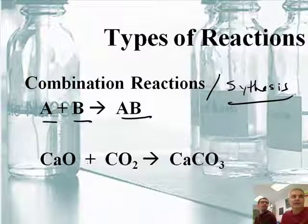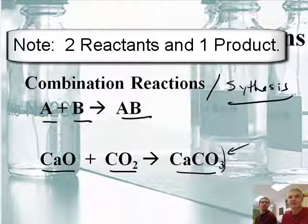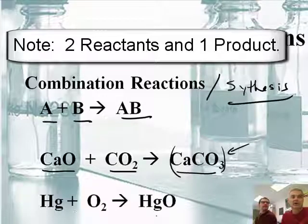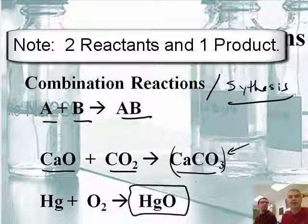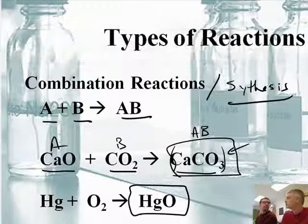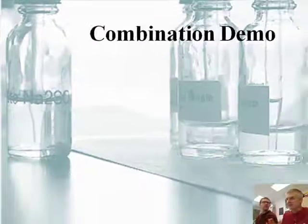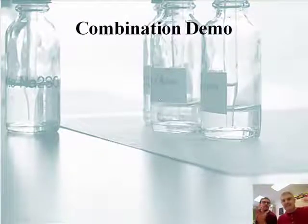Here's a real example: if I take calcium oxide and react it with carbon dioxide, it makes calcium carbonate. This is the stuff you find in bones, seashells, and marble. Or if I take mercury and react it with oxygen, it makes mercuric oxide — mercury(II) oxide. Notice it makes one substance. You have chemical A, chemical B, and you get chemical AB. Let's do a demonstration and synthesize something.